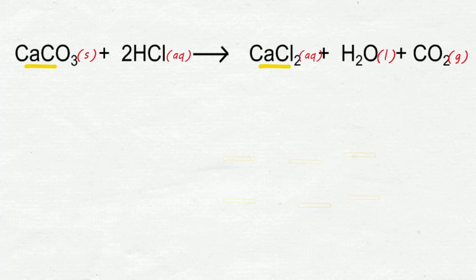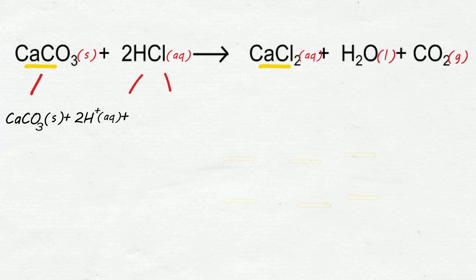So for calcium carbonate, S states don't separate it. For HCl, it's in Aq states. Separated into 2 hydrogen and 2 chloride ions. Because there's a 2 in front.